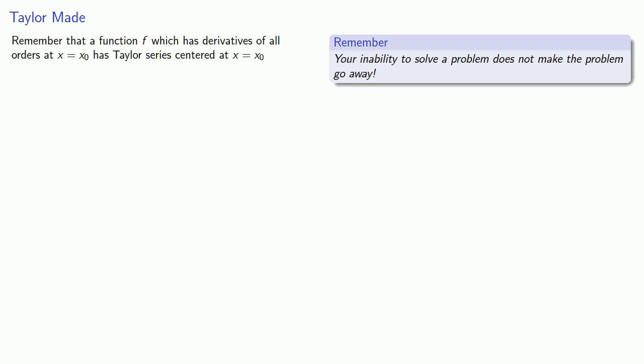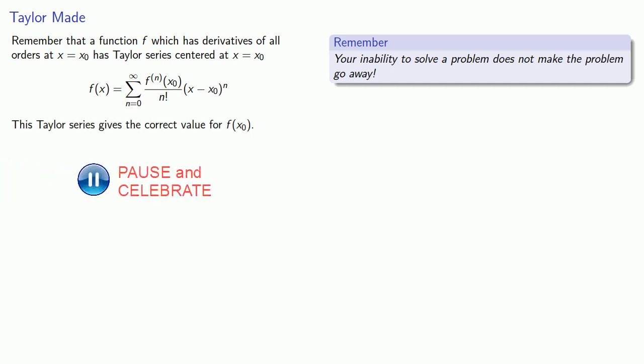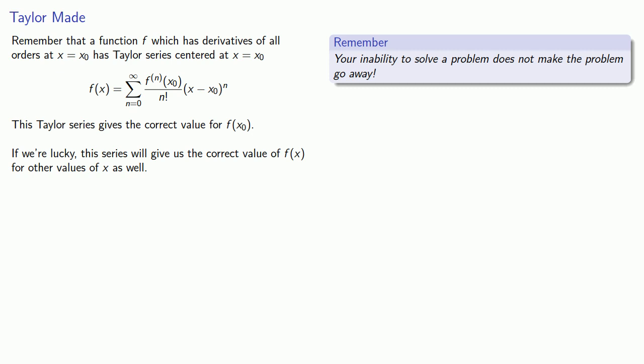Remember that a function f which has derivatives of all orders at x equals x0 has a Taylor series centered around x equals x0. This Taylor series gives the correct value for f of x0, and if we're lucky, this series will give us the correct value of f of x for other values of x as well.